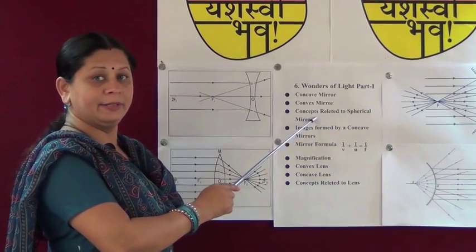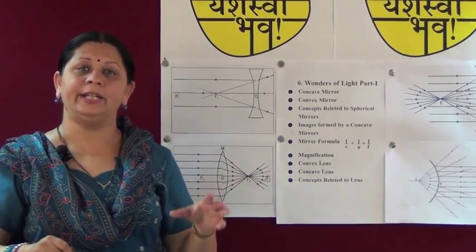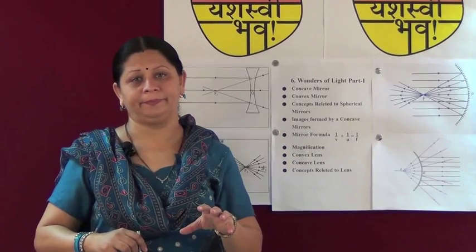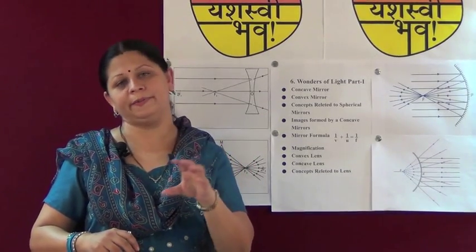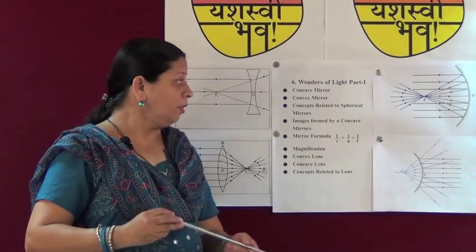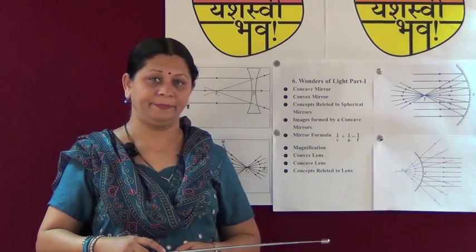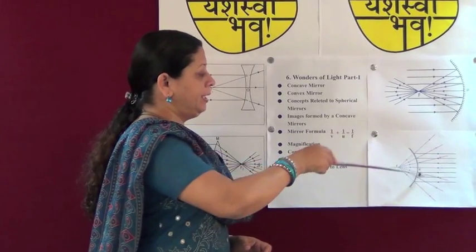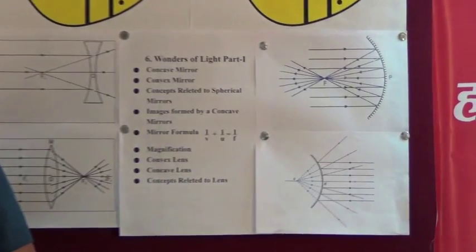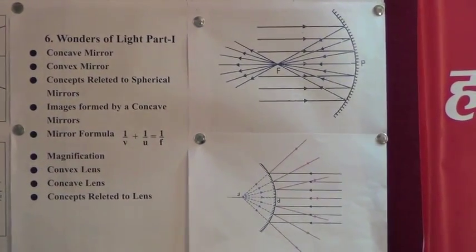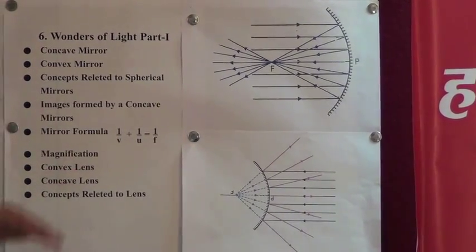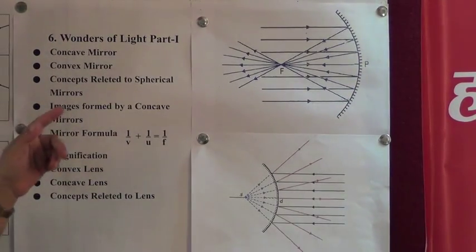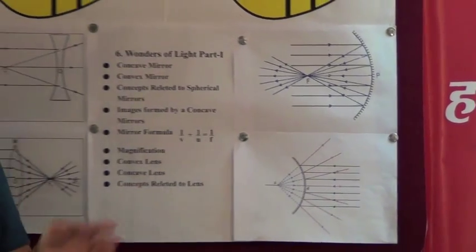Now, what are the concepts related to spherical mirrors? First, center of curvature: spherical mirrors are part of some sphere, and the center of this sphere is called the center of curvature of the spherical mirror. What is the pole? The center of the spherical mirror is called the pole, shown here by P. What is the principal axis? A line passing through the center of curvature and the pole is the principal axis of the mirror.